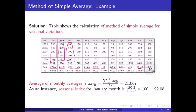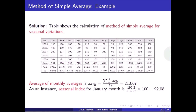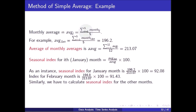Taking the average of all monthly averages gives us AAVG = 213.07. The monthly average is calculated as the summation of the month's values divided by total five years. For the January month it is 196.2. The average of monthly averages is the summation of all monthly averages divided by the total number of months (12), giving 213.07.